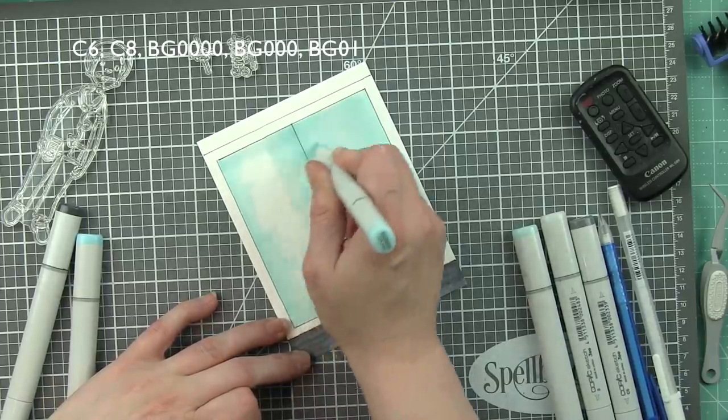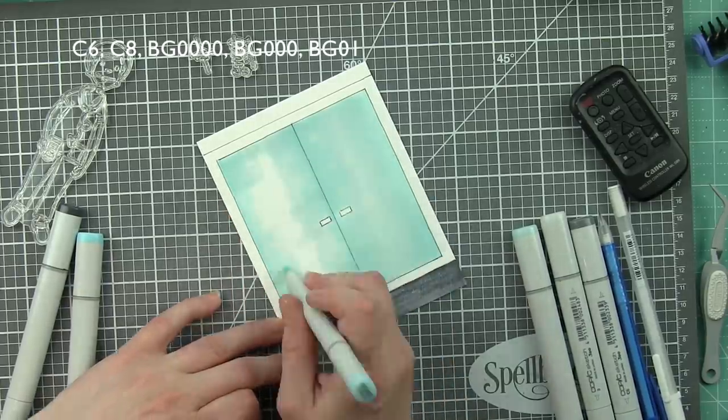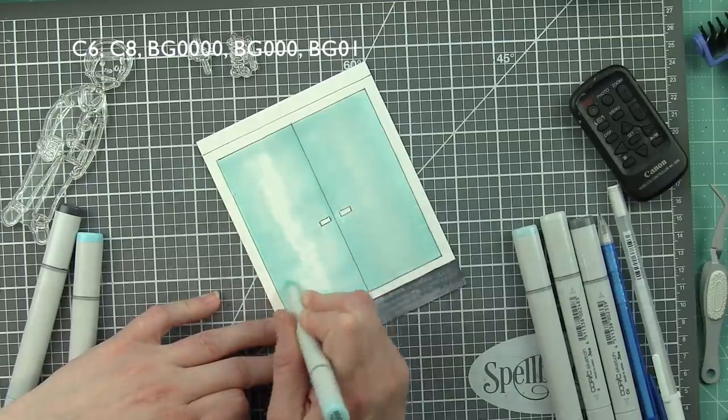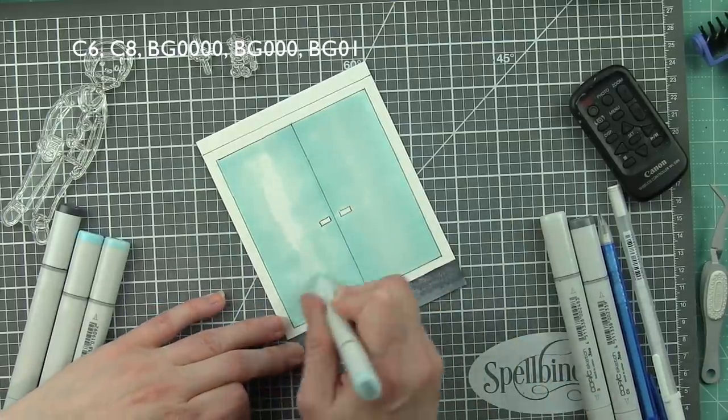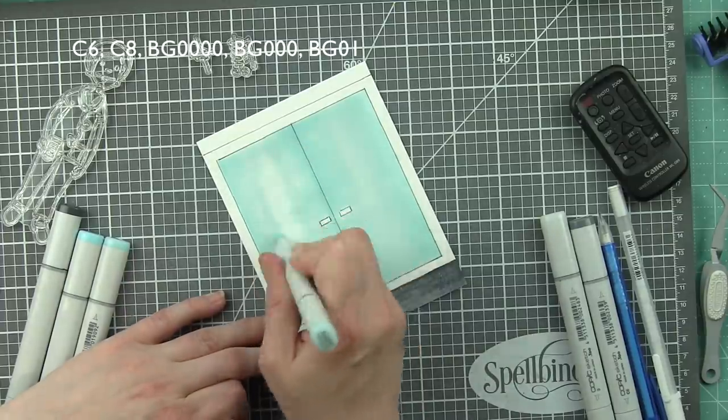And the more saturated it gets, the more this blends out. I don't mind the lighter area in the center. It's a great little highlight area, almost like maybe if it's where the sun is hitting it or whatever and reflecting off. But I want to have a nice blend and I don't want to see any of those chisel tip lines in my doors.